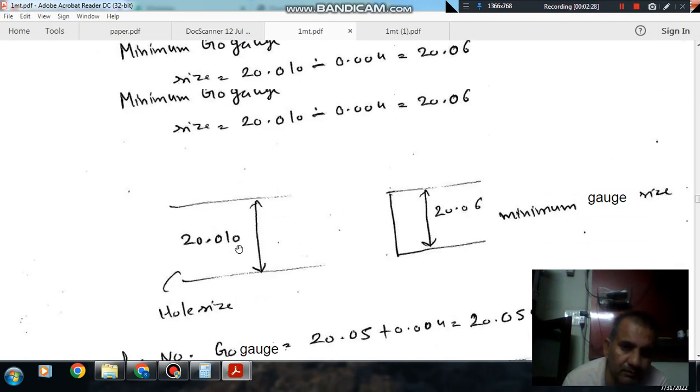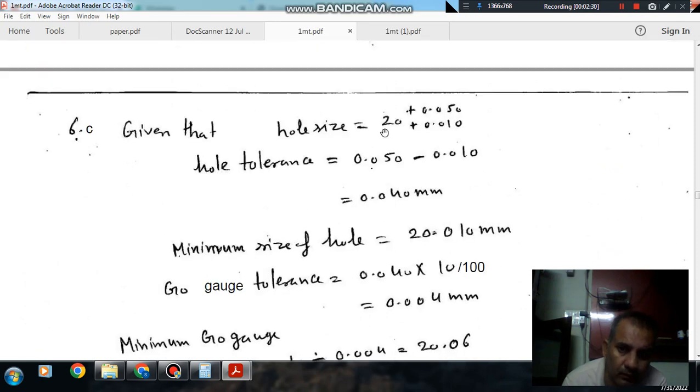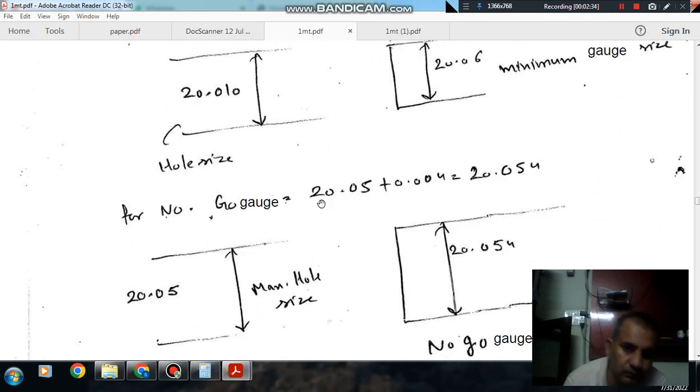And the maximum size of the hole is 20.05. So maximum size will be 20.05. Sorry, maximum size of Go gauge...